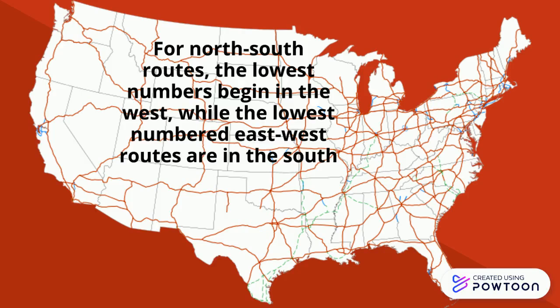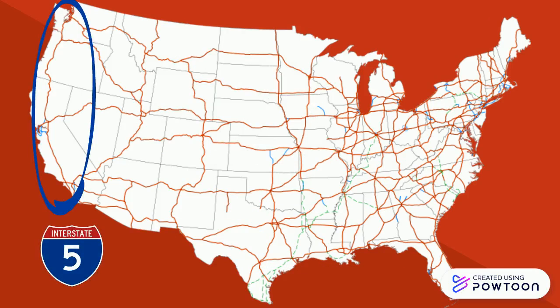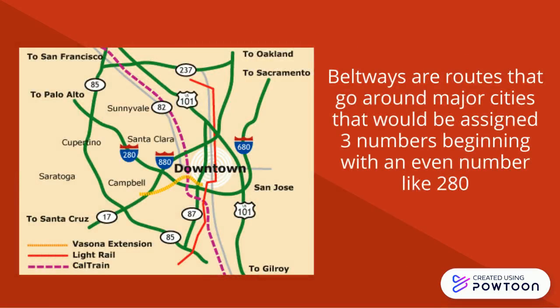For north-south routes, the lowest numbers begin in the west, while the lowest-numbered east-west routes are in the south. By this method, Interstate Route 5 runs north-south along the west coast, while I-10 lies east-west along the southern border.